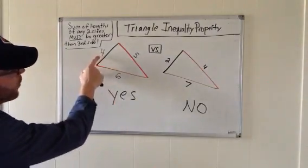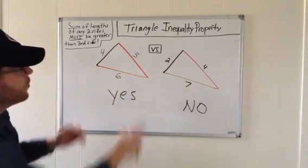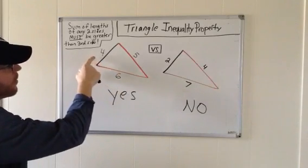Here we have a length of four, a length of six, and a length of five. If you take any two sides and add them together, they'll all exceed the length of the third side.